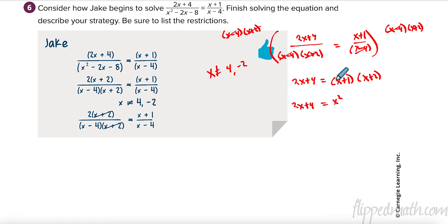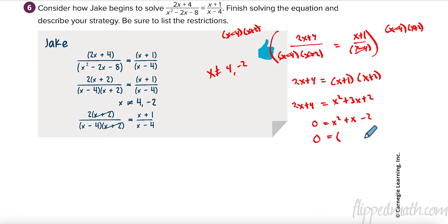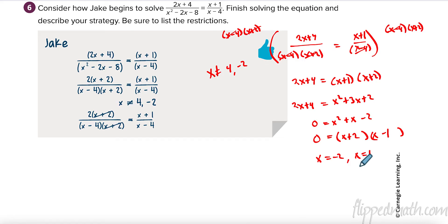x times x is x squared, 2x plus 1x is 3x, plus 2. Move everything to get it equal to zero: subtract 2x, so 3x minus 2x is 1x, and subtract 4 to give negative 2. Factor: two numbers that multiply to negative 2 and add to positive 1 are positive 2 and negative 1. So x equals negative 2 or x equals positive 1. But check our restrictions — x cannot equal negative 2, so that answer doesn't work. My only answer is x equals 1.